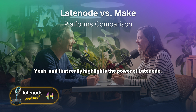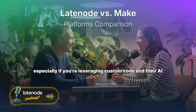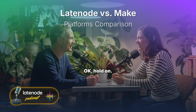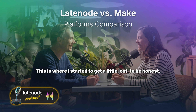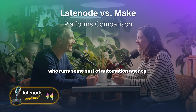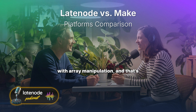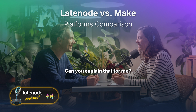That really highlights the power of Latenode — you can do a lot in those 30-second blocks, especially leveraging custom code and their AI features. The article mentions Steen DeVos, who runs an automation agency, and he says how Make struggles with array manipulation. That's where Latenode's custom code comes in.